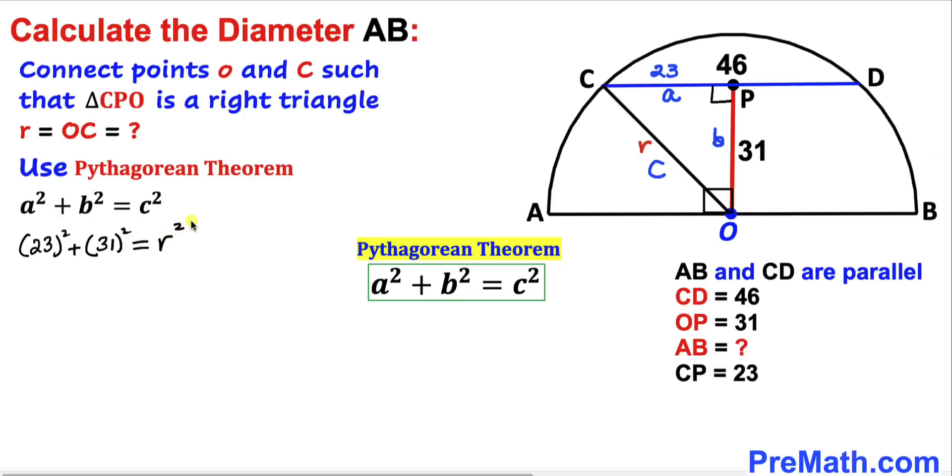Let's simplify further. That gives us 529 + 961 = r². Let's add these left-hand side numbers: 1490 = r².